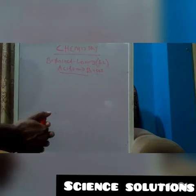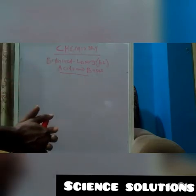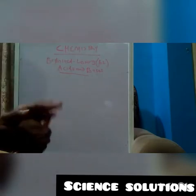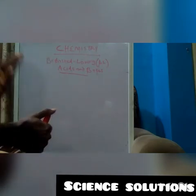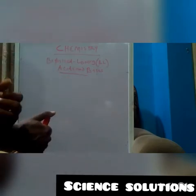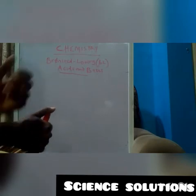But Bronsted and Lowry goes beyond that. They define an acid as a substance that donates protons, while a base is a substance that accepts protons. An acid is a substance that donates protons. Protons are also known as hydrogen ions, while a base is a substance that accepts protons.